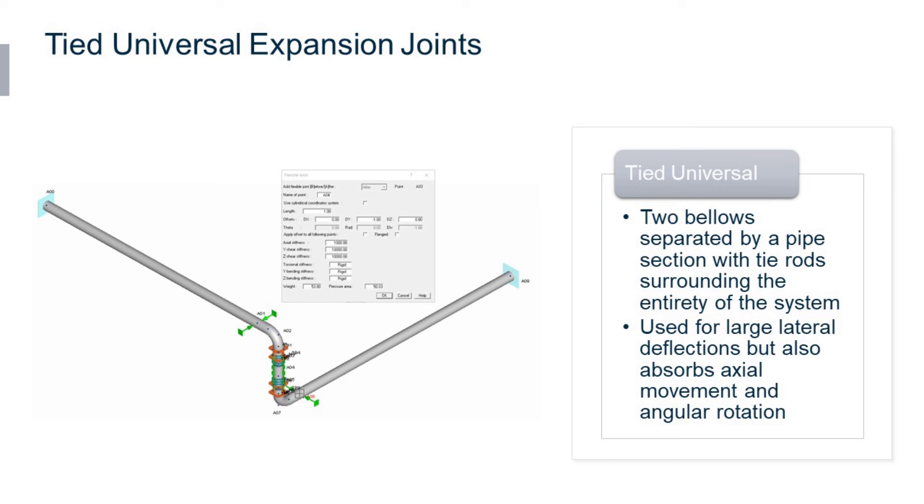Next we have a tied universal expansion joint. A universal expansion joint contains two bellows that are joined by a common connector and they're used for the purpose of absorbing any combination of axial movement, lateral deflection, and angular rotation.